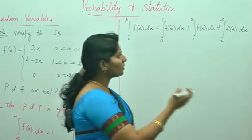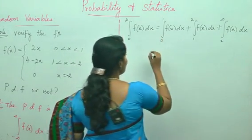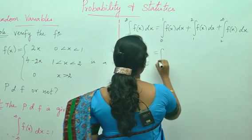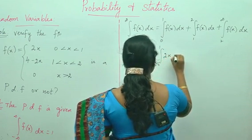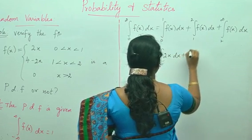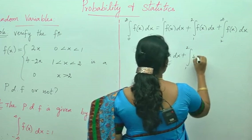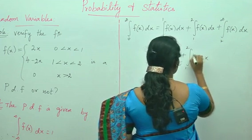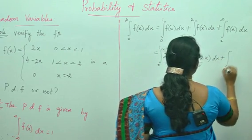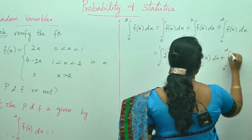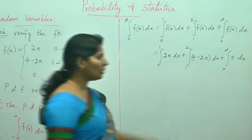After splitting the limits, you move on to substitution: integral from 0 to 1 of 2x dx, plus integral from 1 to 2 of (4 − 2x) dx, plus integral from 2 to infinity of 0 dx. The last part becomes 0 entirely.